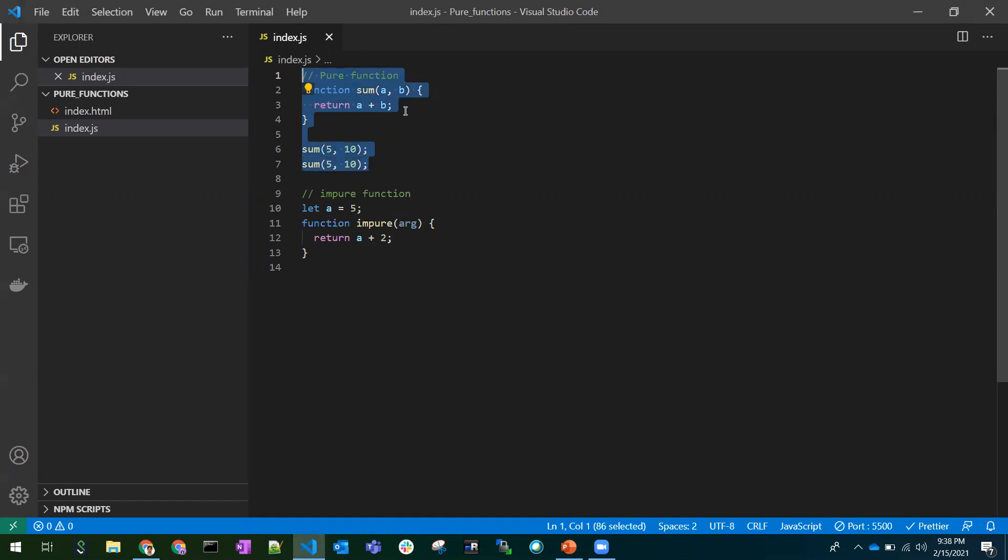I'm not making the concept complicated, just with a simple example. This is a pure function. We might have knowingly or unknowingly written pure functions in our applications. It takes two arguments, and whenever the same arguments are sent, the output should be the same.